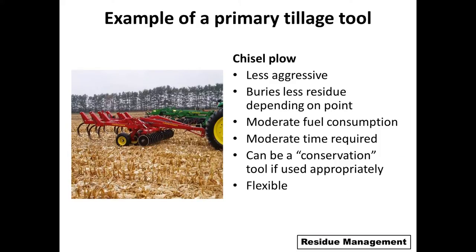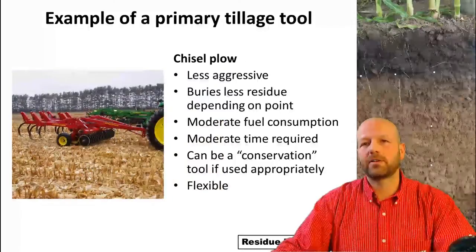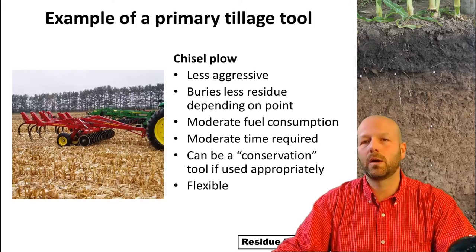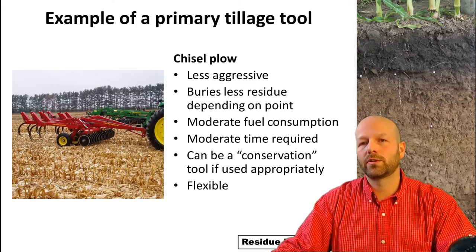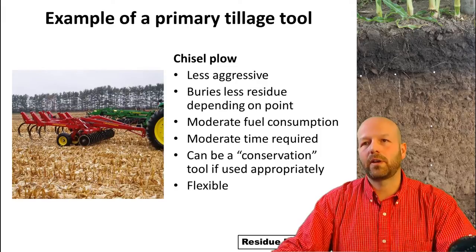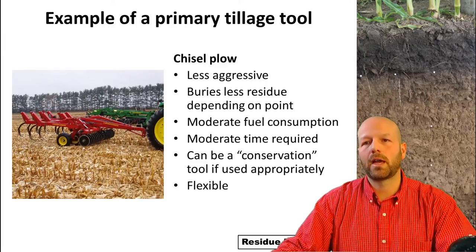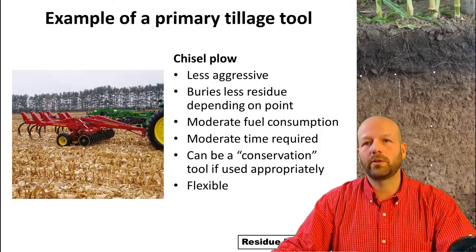Here's an example of a primary tillage tool very common in Wisconsin: the chisel plow. It can be less aggressive than other tools depending on how it's set up, and residue left can vary depending on the point or setup. It uses moderate fuel compared to other tools and doesn't require a lot of time. If properly set up, it can be considered a conservation tool — which is why it's so popular and commonly used here in Wisconsin.